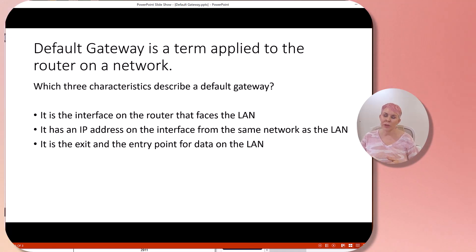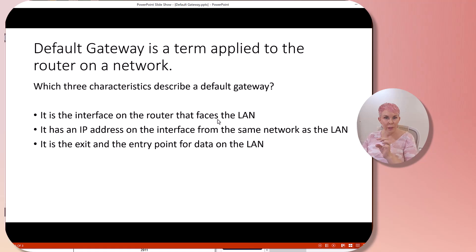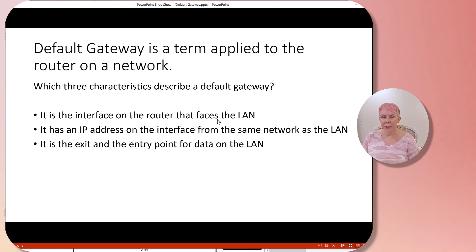There are three characteristics that describe the default gateway. The first one is that it is an interface on the router that faces the LAN — the local area network. This term only applies to local area networks; it doesn't apply to wide area networks. Also, this interface that faces the LAN will have an IP address assigned to it, and that IP address has to be assigned from the local area network that it is servicing. Lastly, the default gateway is the exit and entry point for data coming and going for the LAN.